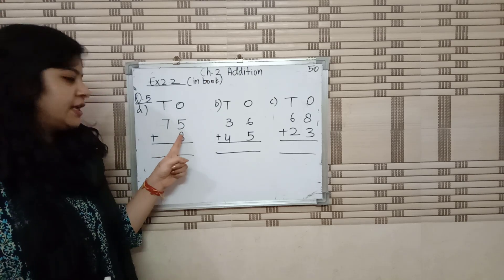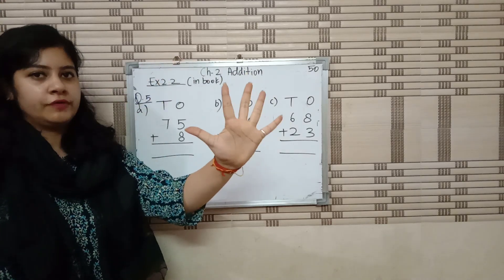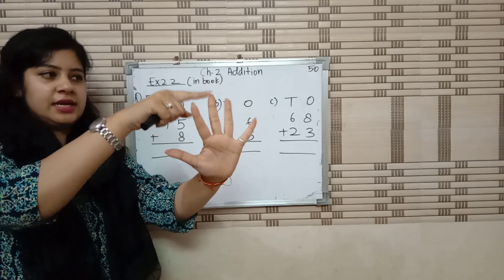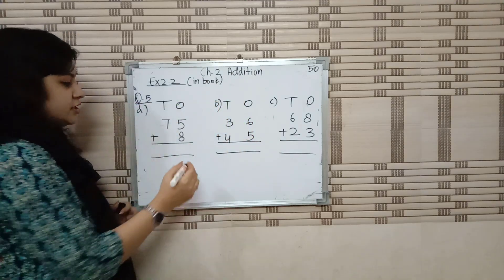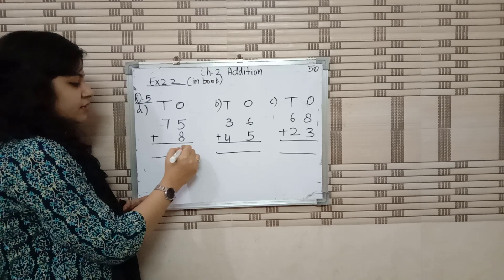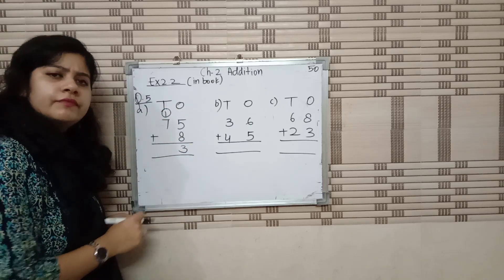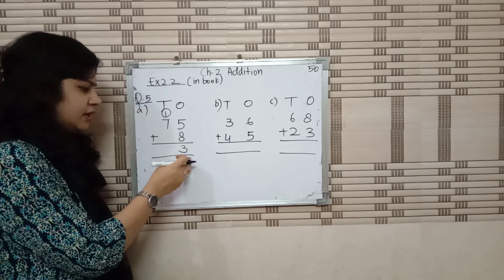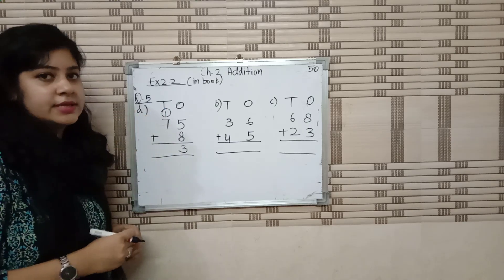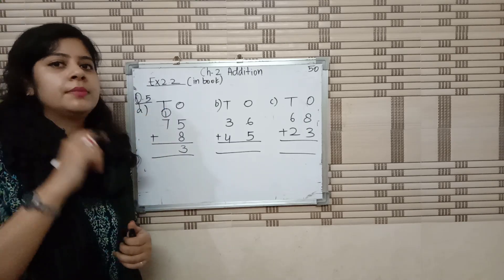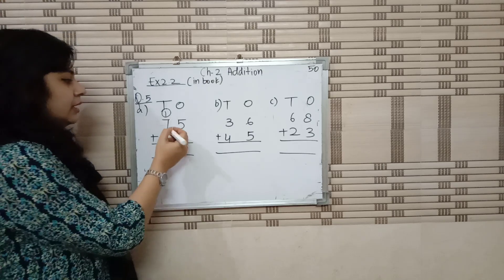5 and 8. 8 is the bigger number, keep 8 in our mind and find 5 on our fingers. After 8: 9, 10, 11, 12, 13. 13 is a 2-digit number. We write 3 and carry 1 over here. Why do we carry 1 and not 3? Because 1 is on 10's place, and whatever number is on 10's place, we carry it forward.